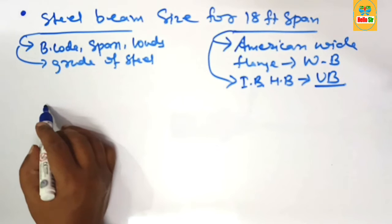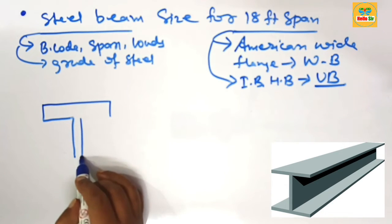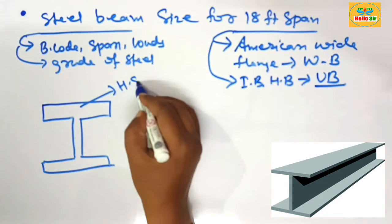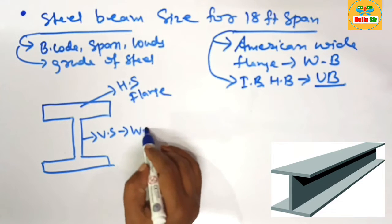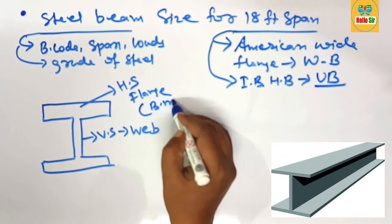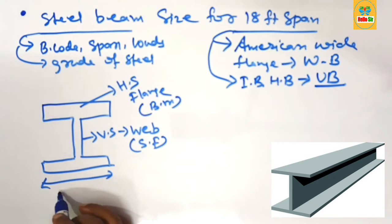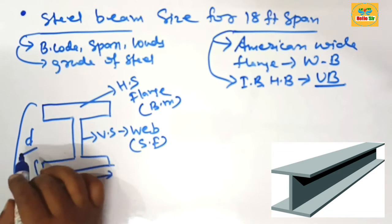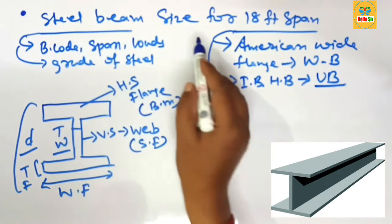First, let's understand the American Wide Flange beam with a rough diagram showing its different parts. The horizontal section of the beam is known as the flange, and the vertical section is known as the web. The flange generally resists bending moment and the web generally resists shear forces. The key dimensions are: width of flange, thickness of flange, depth of the beam, and thickness of web.